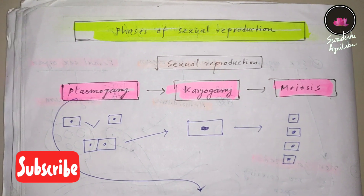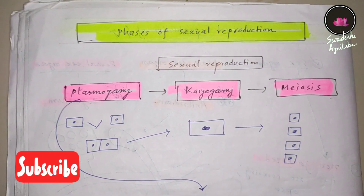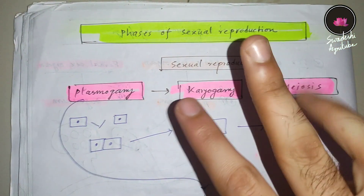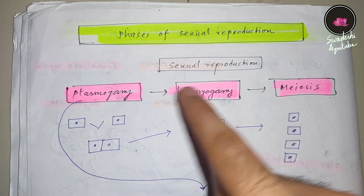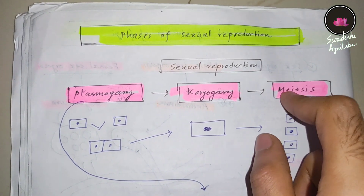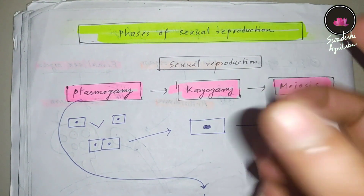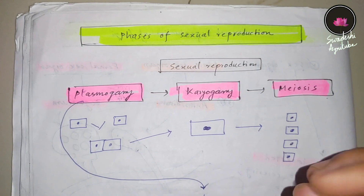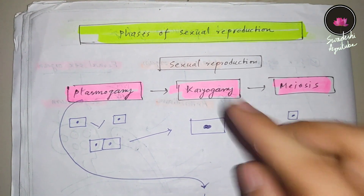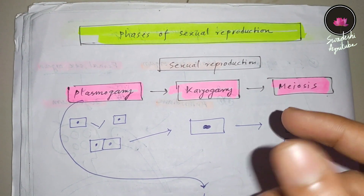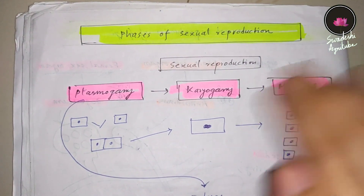Now we have to talk about the phases of sexual reproduction. It has three steps. The first step is plasmogamy, the second is karyogamy, and the third is meiosis. Plasmogamy means the mixing of protoplasts, karyogamy means the mixing of nuclei, and meiosis we all know.